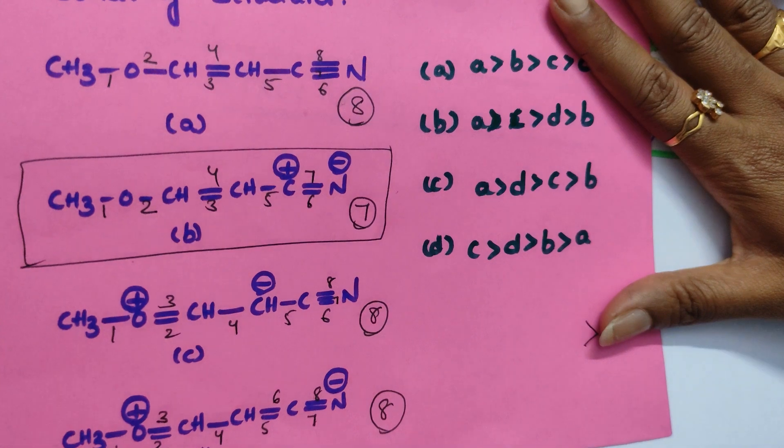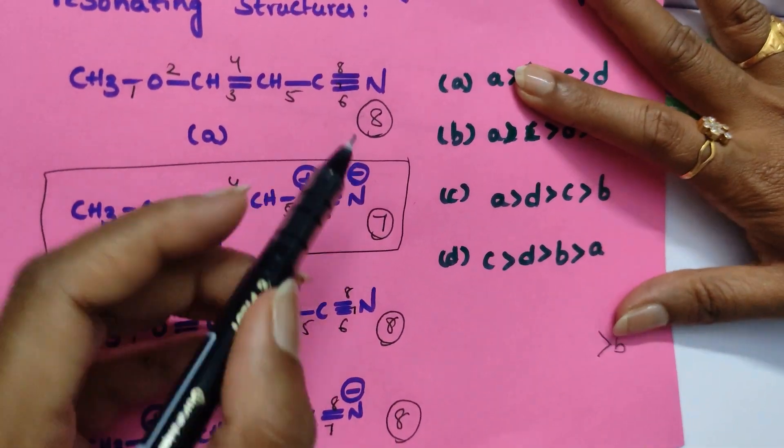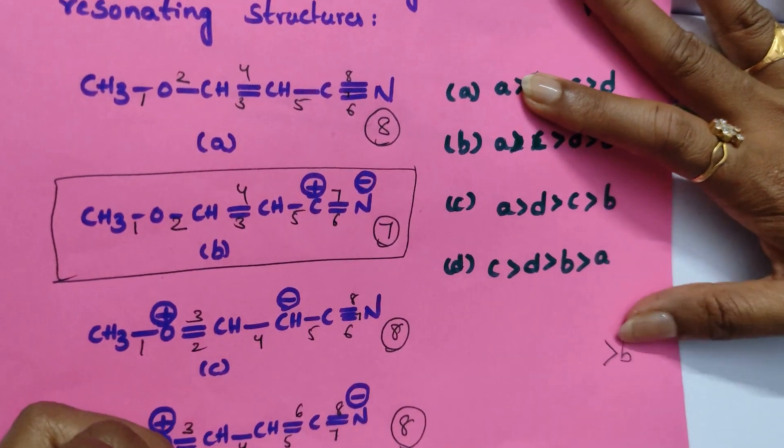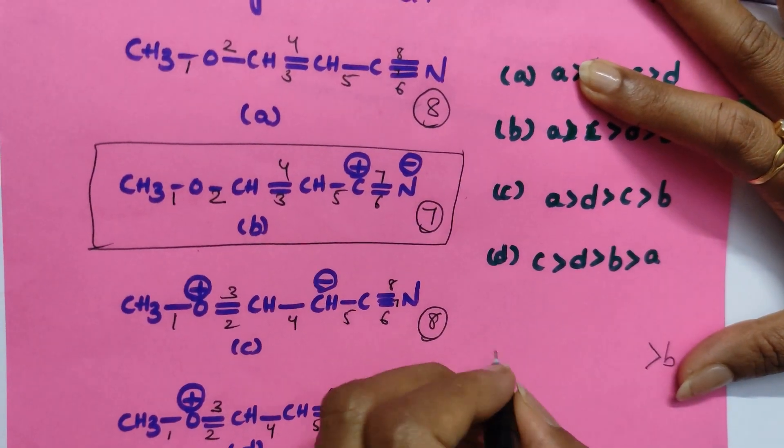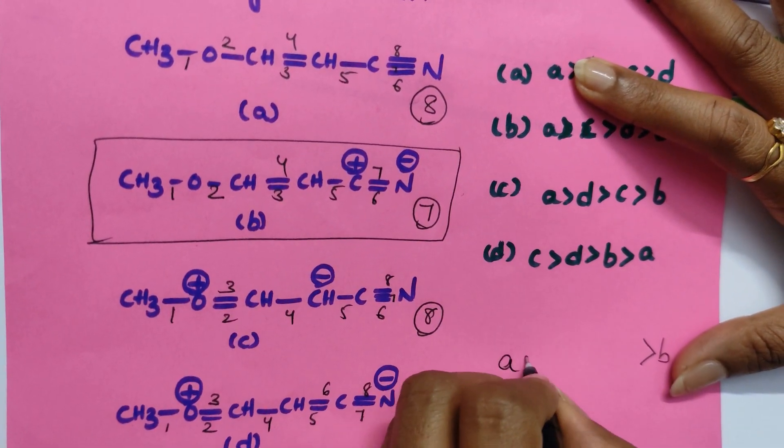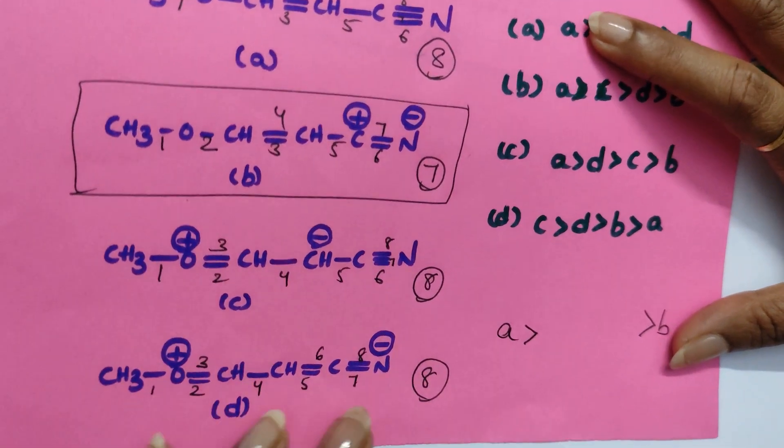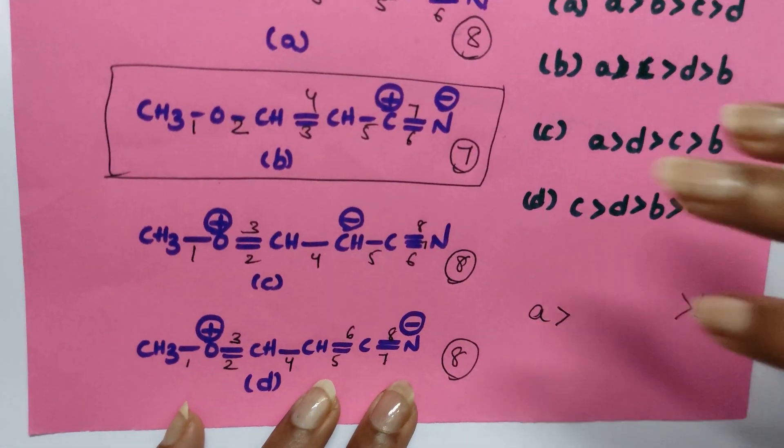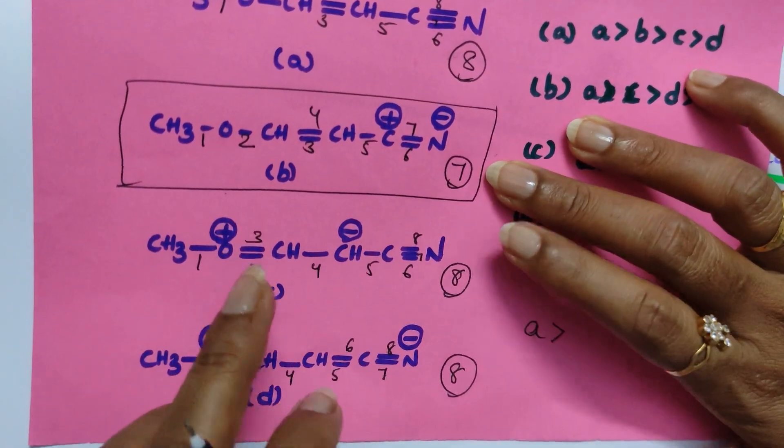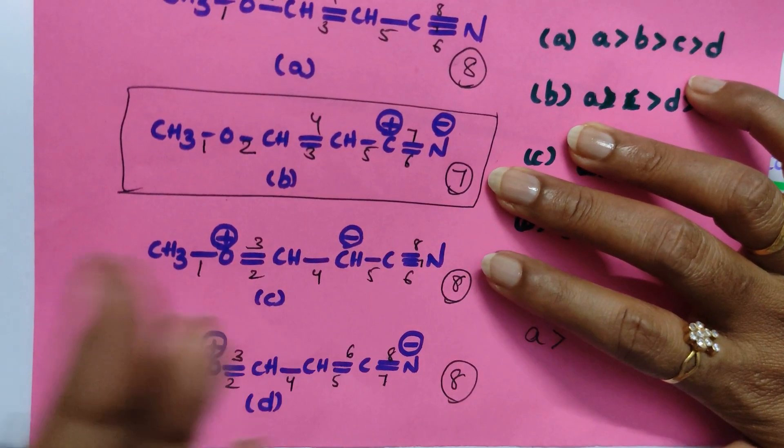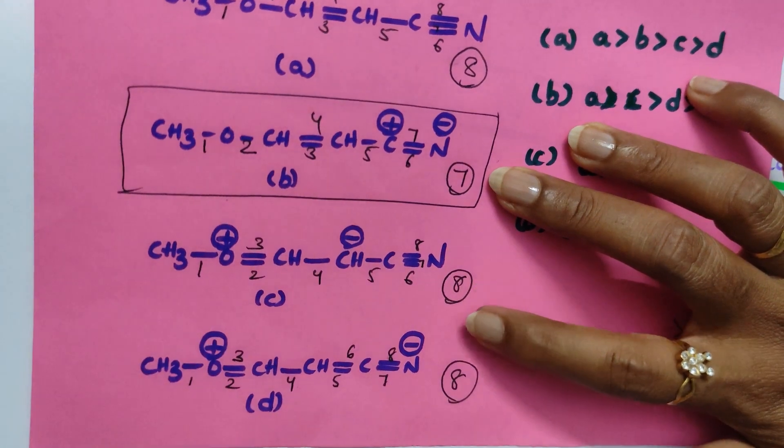Now in these three you have to find which is the neutral one. If covalent bonds are same, you should see the neutral one. Which is the neutral one? A is neutral, no charge. So A comes to the first one. After that in these two, both are having same charges, no neutral molecule.